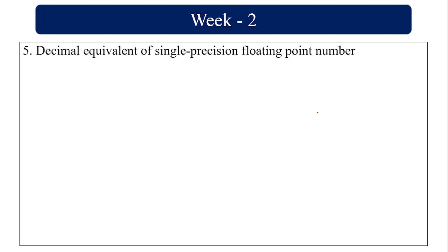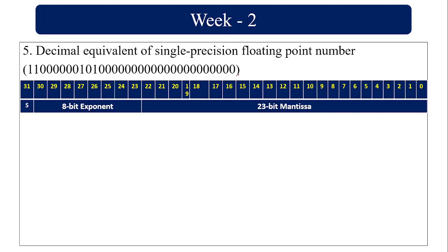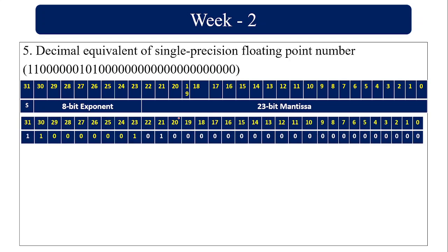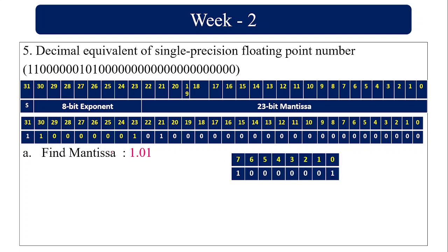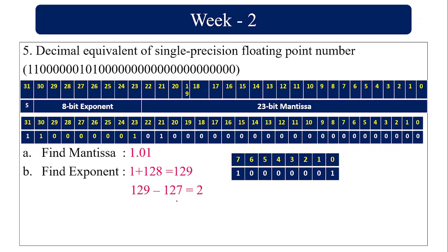Find the decimal equivalent of a single precision floating point number given as a 32-bit value. Take the reverse order: the first bit is the sign bit, the next 8 bits are the exponent, and the remaining 23 bits are the mantissa. The mantissa always starts with 1, giving 1.01 with remaining zeros. The exponent part gives 2 power 0 plus 2 power 7 equals 129, and subtracting 127 gives exponent 2. This is the reverse of problem 1.